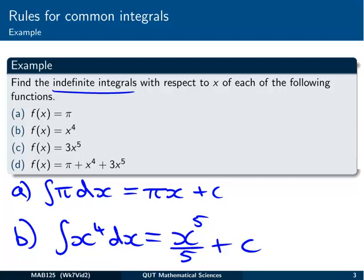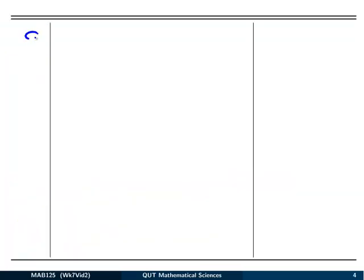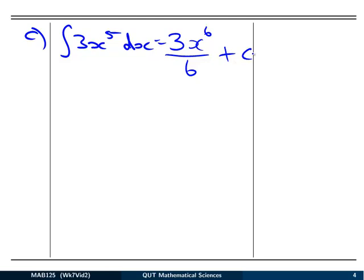Question c, f of x is 3x to the 5. So we want to integrate 3x to the 5 with respect to x. We've got a constant multiplied by a power, so I'm going to leave the constant. Integrate the power x to the 5 by increasing the power to 6 and dividing by 6, and then adding in our integration constant. The last thing is just to cancel our common factors there. So we've got x to the 6 on 2 plus c.